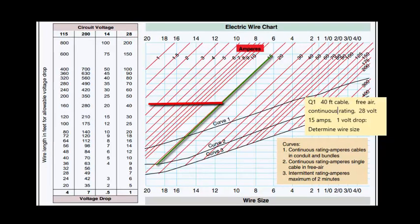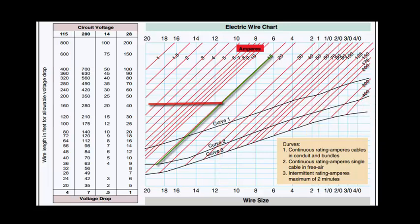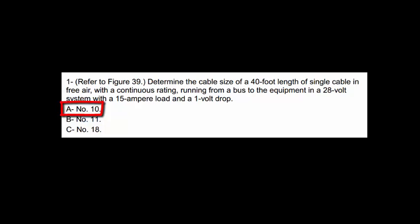Next, we're going to follow this down, this intersection to here, and it puts us between the 12-gauge and the 10-gauge wire. So we always go to a larger wire size when we're in between these. It just so happens that the way wires are numbered is 10-gauge is a larger wire than 12-gauge. I know it seems backwards, but that's the way the numbers work. So we're going to go to the larger 10-gauge wire to carry this 15-amp load for 40 feet, and we're not going to have more than a 1-volt drop here.